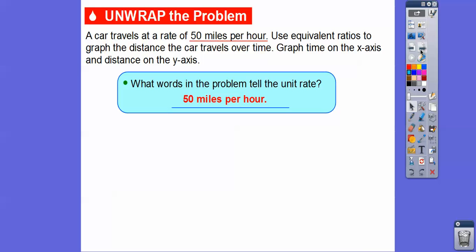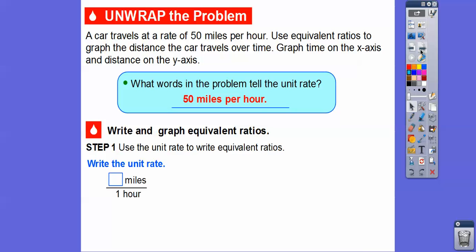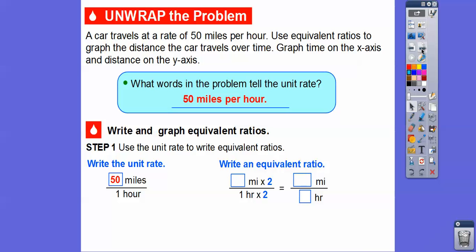That tells us our unit rate. So we're going to go ahead and write and graph equivalent ratios. Use the unit rate to write equivalent ratios. It's 50 miles per hour — that's our unit ratio. Now we're going to write equivalent ratios, so we're going to multiply 50 times 2 and then multiply 1 times 2. 50 times 2 is 100, and 1 times 2 is 2. So 50 miles in 1 hour is the same as 100 miles in 2 hours — we just doubled both.